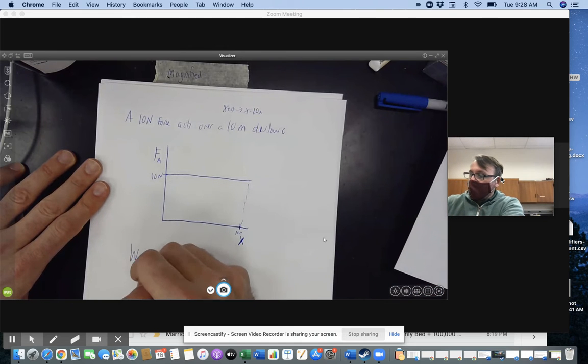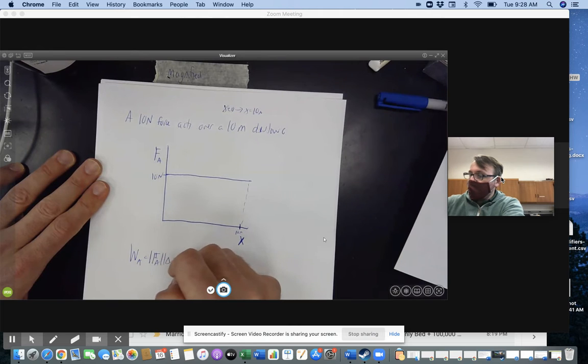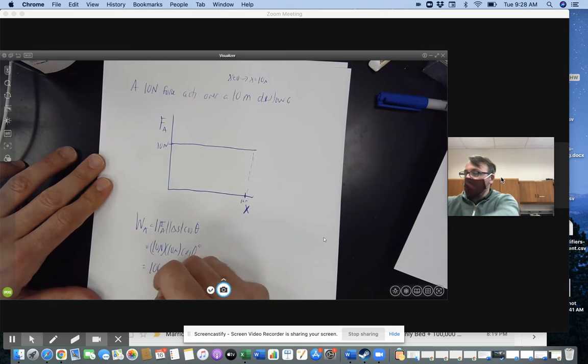So very simply, the work done by the applied force would be the applied force's magnitude times the displacement undergone times cosine of theta. We'll say that's 10 newtons, 10 meters. And let's say it's in the same dimension or direction, cosine of zero. We would know that that would be 100 joules.